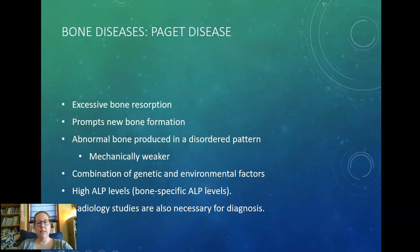In Paget's disease, you see excessive bone resorption. Bones are metabolically active with bone formation and resorption always going on, and it depends on load — exercise triggers more bone formation, while being bed-bound causes bone loss. In Paget's disease, excessive bone resorption prompts new bone formation, but when reformed, it's produced in a disordered pattern. Part of what gives bone its strength is the pattern of how it's laid down, so this bone is mechanically weaker.